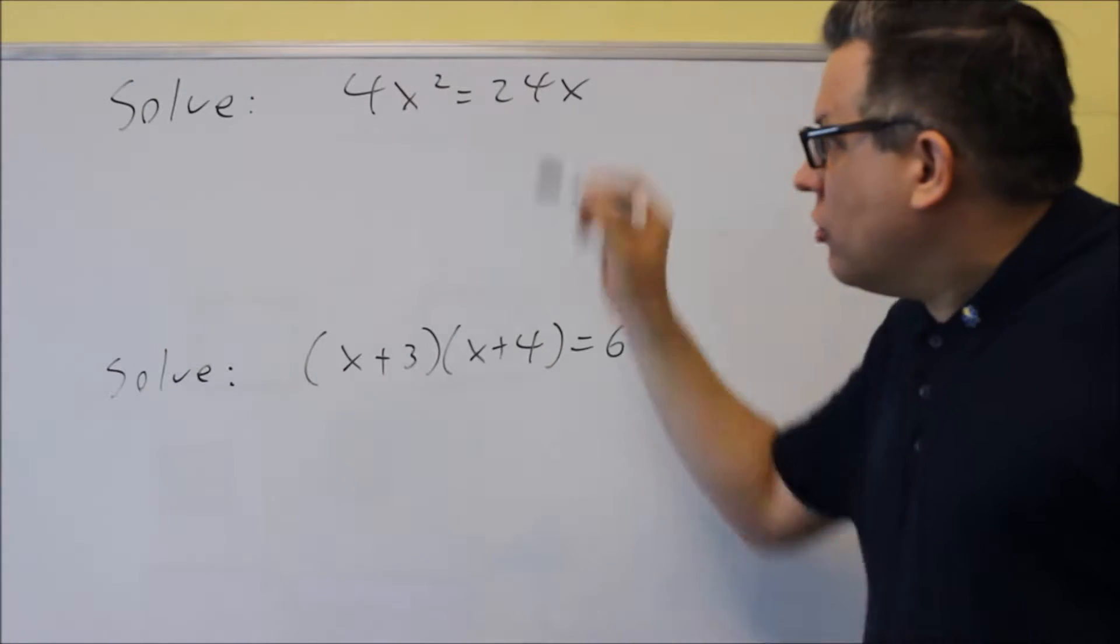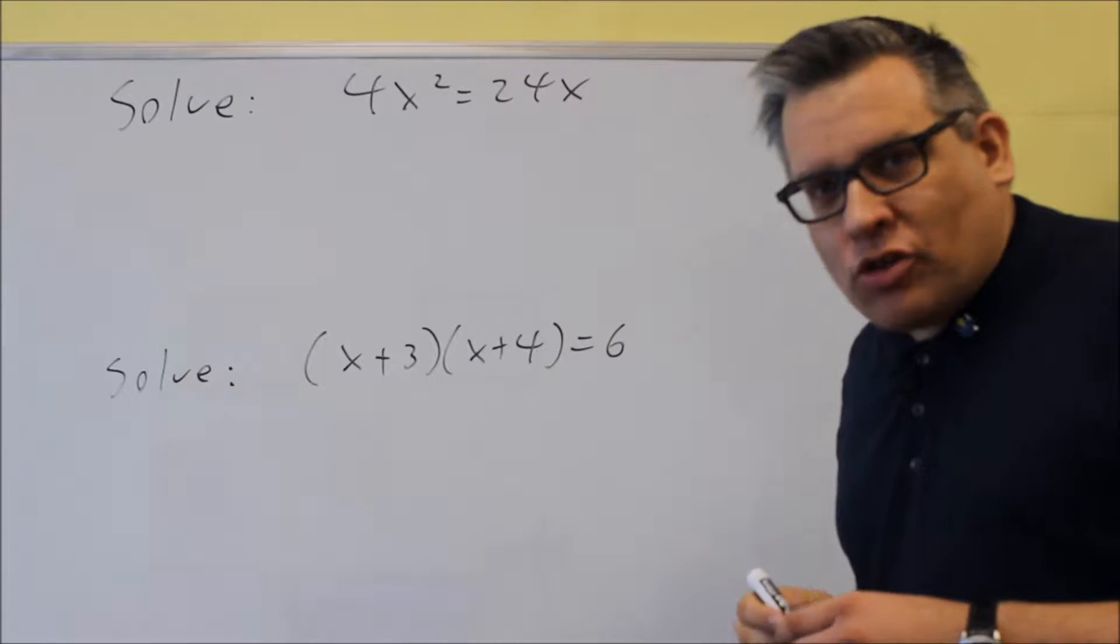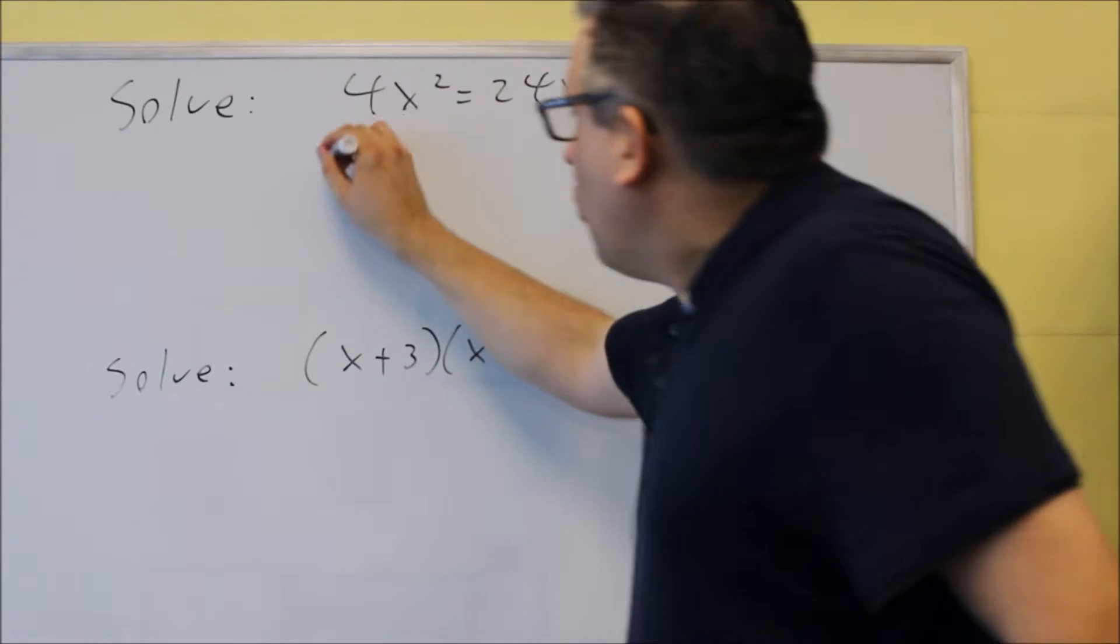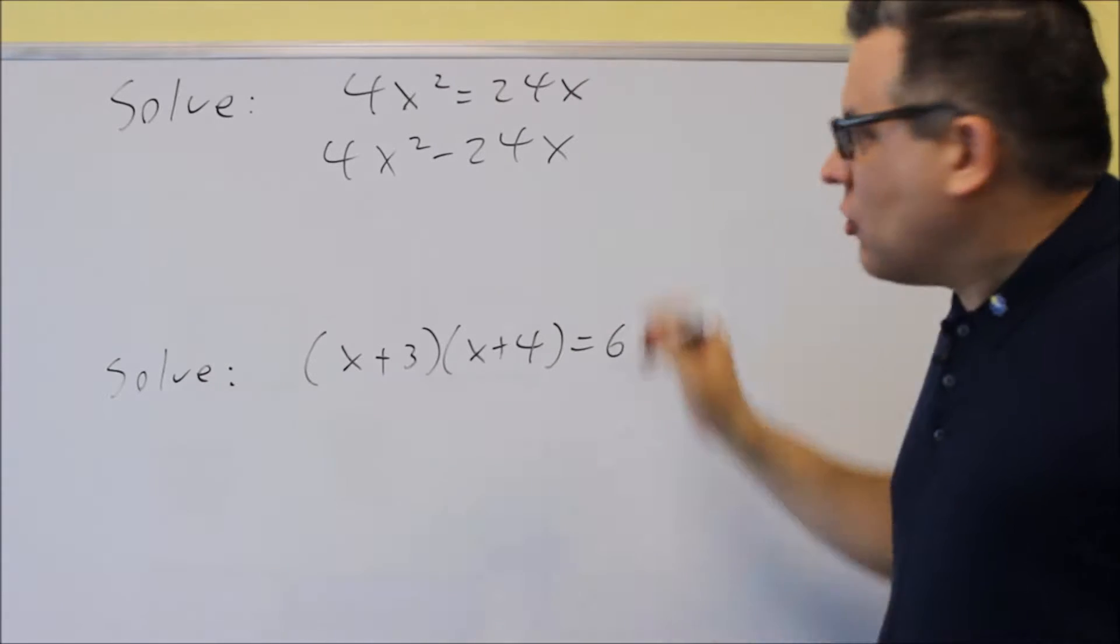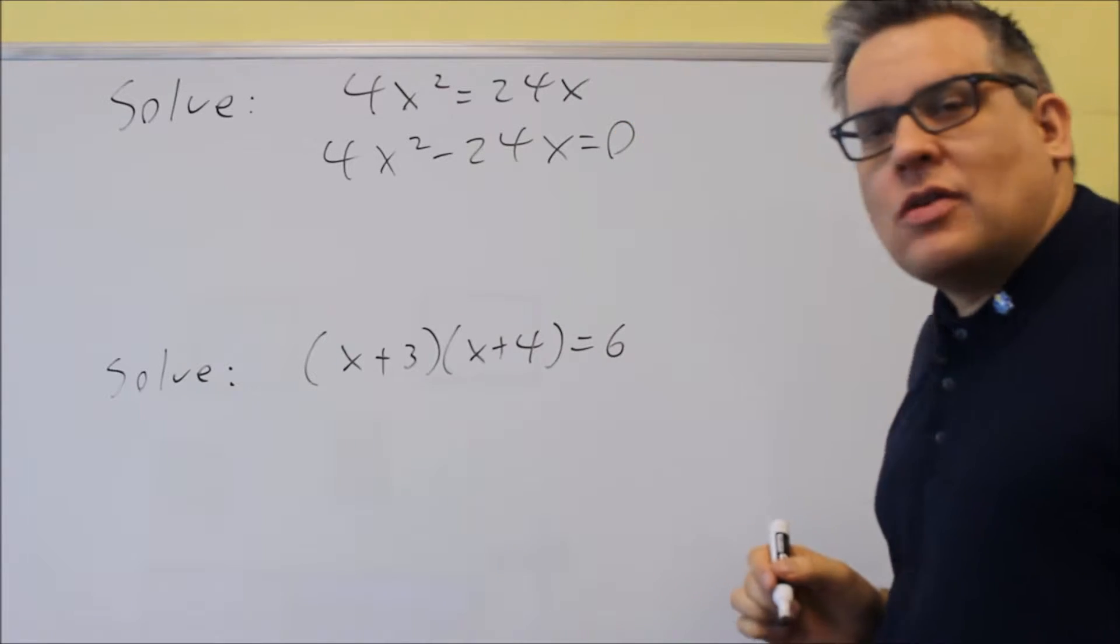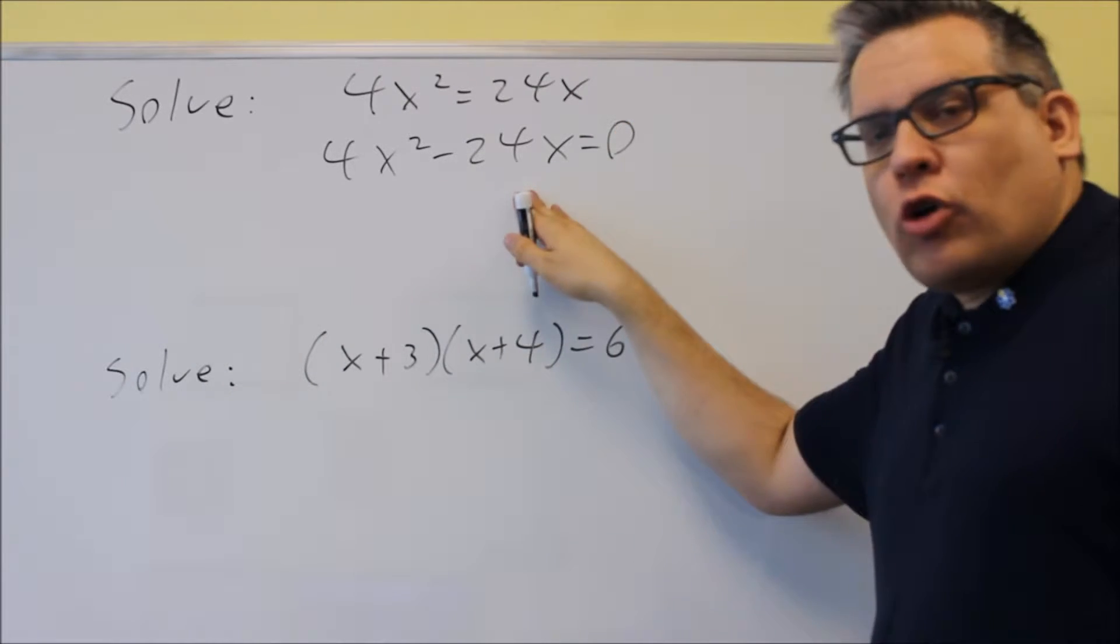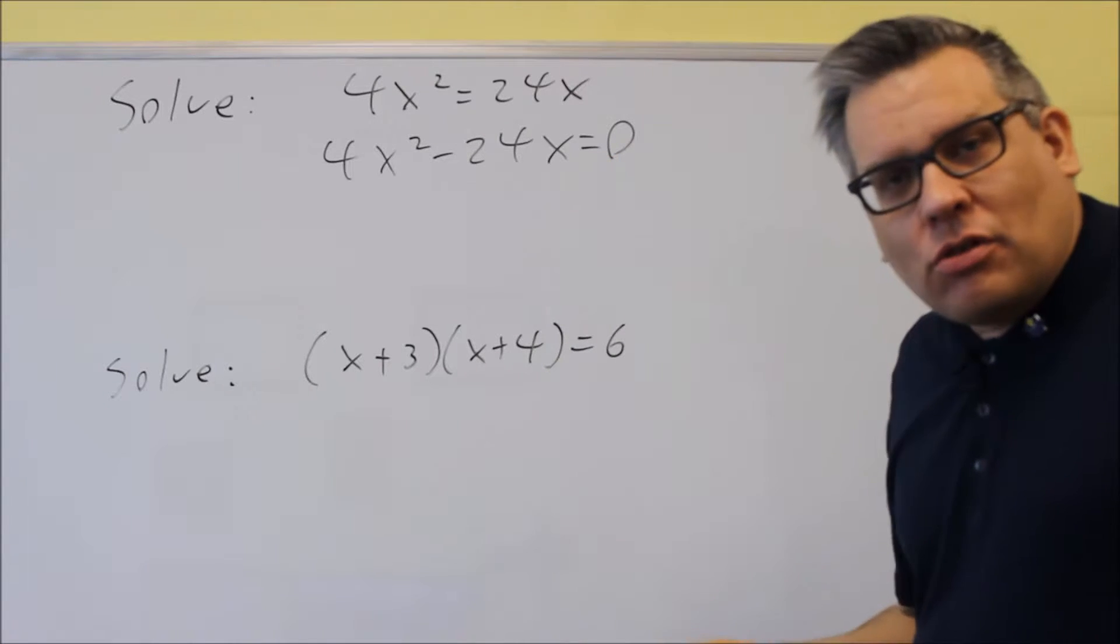So let me show you the correct way that you want to do this particular problem. We're not going to divide both sides by x. Instead, we're going to move 24x over and we're going to get it equal to zero. So now that we have a quadratic equal to zero, we can next do factoring.